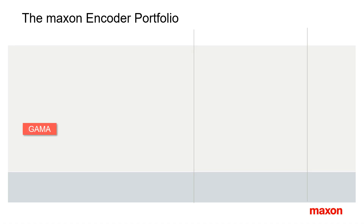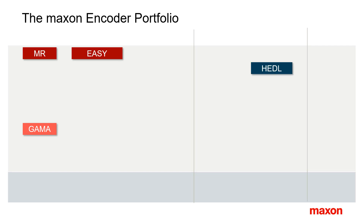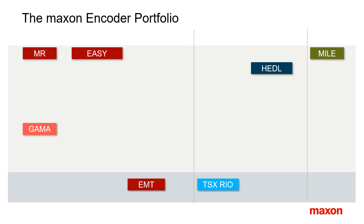In the Maxon catalog, you find encoders with names such as Gamma, MR, EZ, QUAD, HDL, TSX, EMT, ENC322, and MILE.